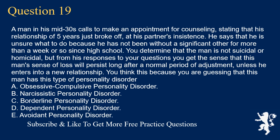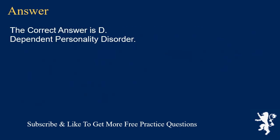Question 19. A man in his mid-thirties calls to make an appointment for counseling, stating that his relationship of five years just broke off at his partner's insistence. He says that he is unsure what to do because he has not been without a significant other for more than a week or so since high school. You determine that the man is not suicidal or homicidal, but from his responses to your questions you get the sense that this man's sense of loss will persist long after a normal period of adjustment, unless he enters into a new relationship. You think this because you are guessing that this man has this type of personality disorder. The correct answer is D. Dependent personality disorder.